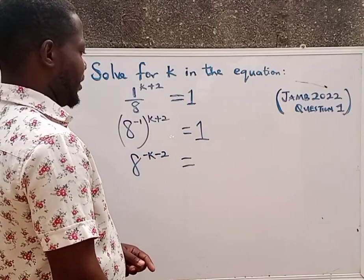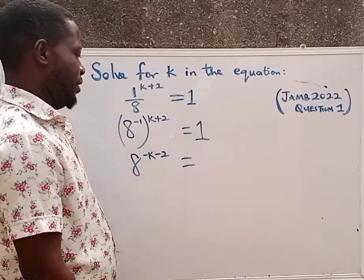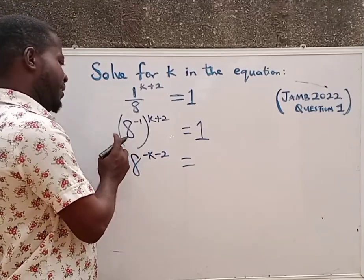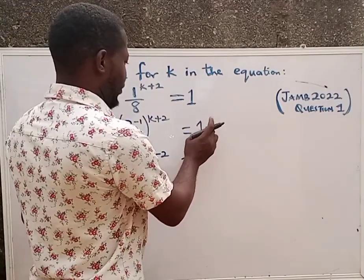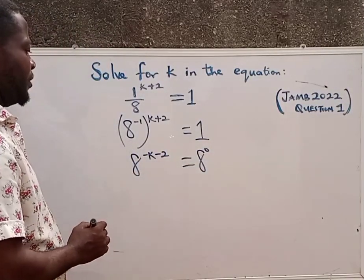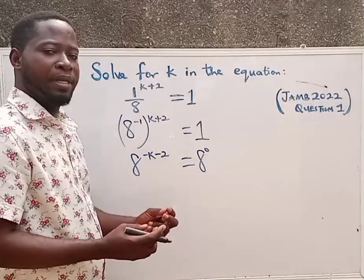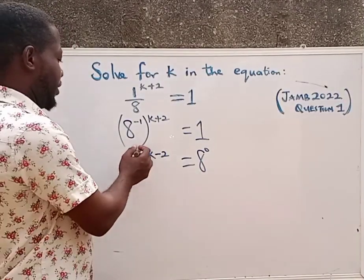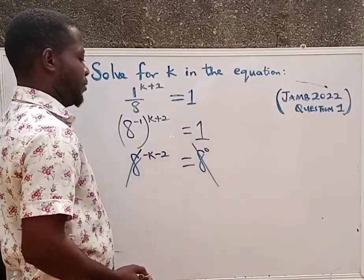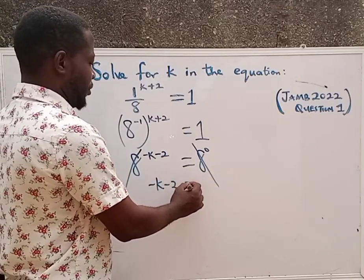Now everything raised to power 0 is equal to 1 according to the law of indices. So in that case, 8 raised to power 0 would give us 1. The major reason is so that we can have the same base. When the same base equates each other, we cancel them out. So we will be left with minus k minus 2 equals to 0.